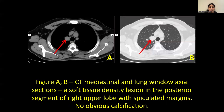These are the CT lung window images, axial sections, in which a soft tissue density lesion can be seen in the posterior segment of the right upper lobe with speculated margins. Also, we can see there are no obvious calcifications within.